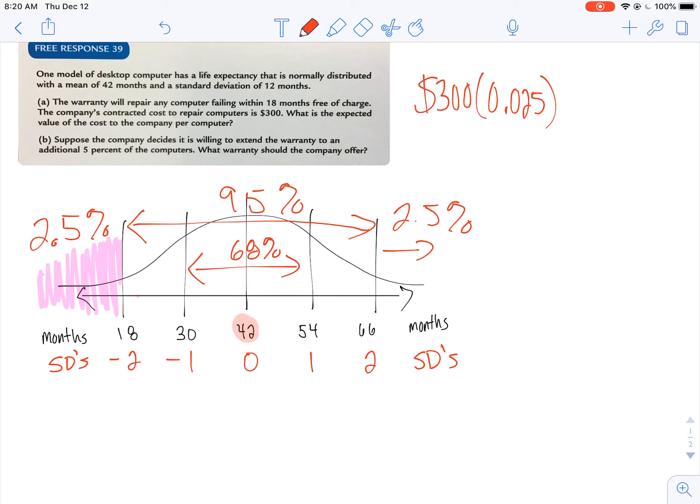Now, for expected value, remember, you multiply your value times the probability. So I'm multiplying 300 times 2.5%. I also know that I'm going to have to pay $0 for the remaining computers, which is about 97.5%.